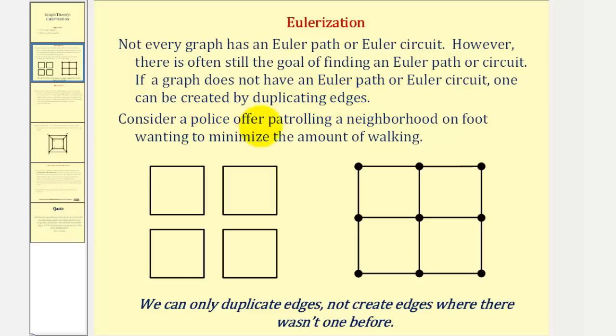As an example, consider a police officer patrolling a neighborhood on foot, wanting to minimize the amount of walking. If this is a diagram of the neighborhood, and the police officer is required to walk down each street at least once.